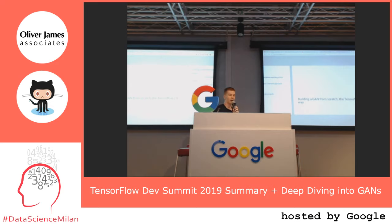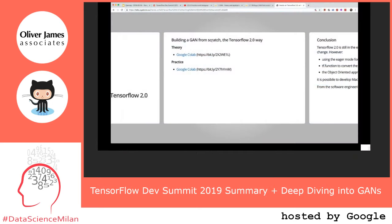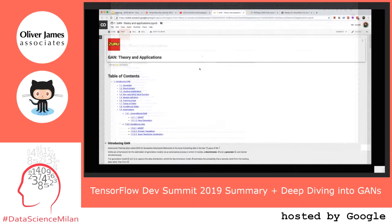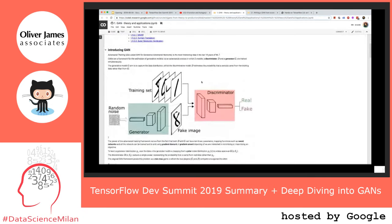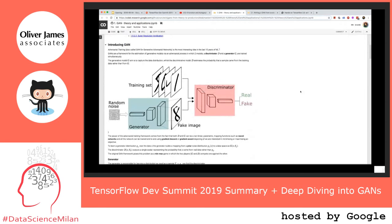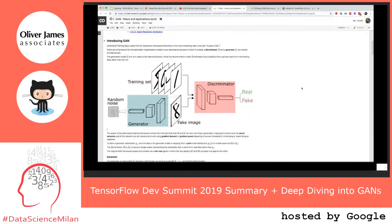This is the main part of the talk, divided in two parts. The first part is pure theory about Generative Adversarial Networks, and the second part is the hands-on coding section. GANs are a framework for the estimation of a generative model via an adversarial training process, in which two models — the discriminator and the generator — are trained simultaneously.